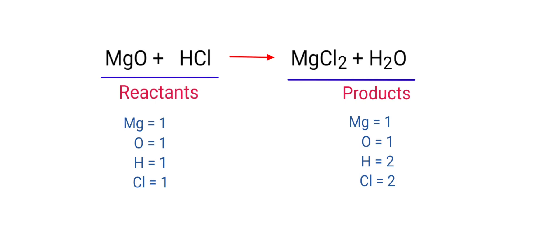In the reactants side there are one Magnesium atom, one Oxygen atom, one Hydrogen atom and one Chlorine atom present. On the products side there are one Magnesium atom, one Oxygen atom, two Hydrogen atoms and two Chlorine atoms present.